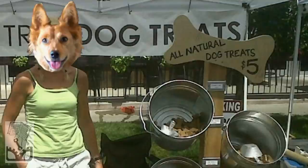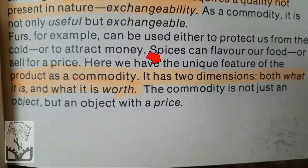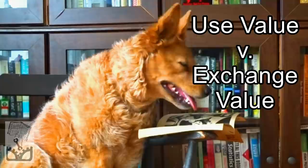Smith and Evans continue: 'The unique feature of the product as a commodity? It has two dimensions — both what it is and what it is worth.' This is about use value and exchange value.